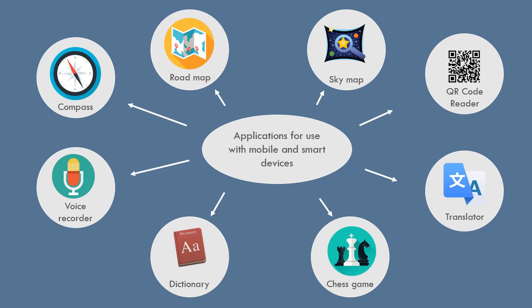Sky map: it points the smart device towards a star or planet in the sky and shows details such as name and location. QR code reader: it obtains information by scanning the QR code. Language translator: it translates text from one language to another.